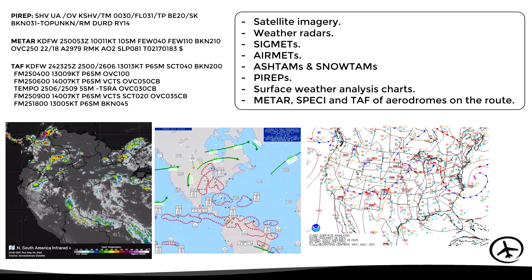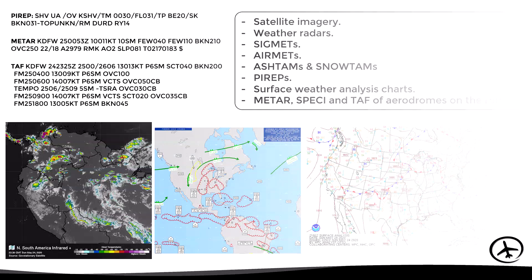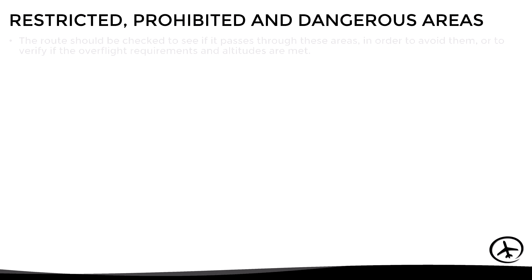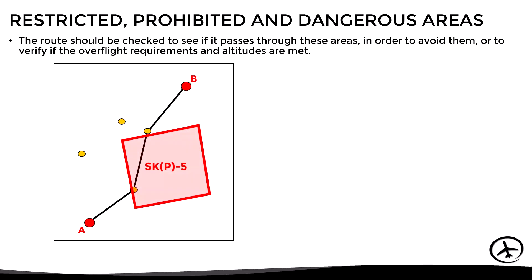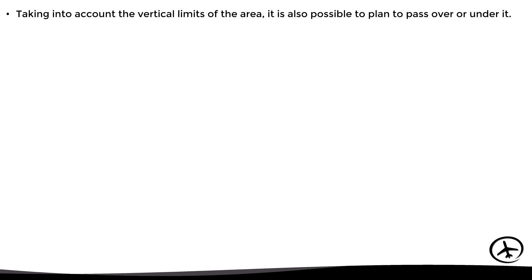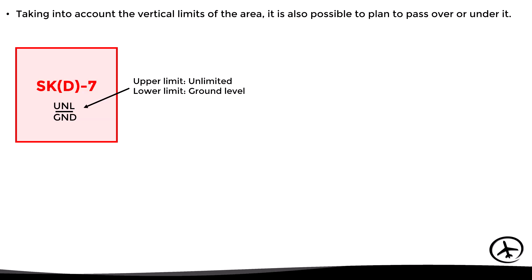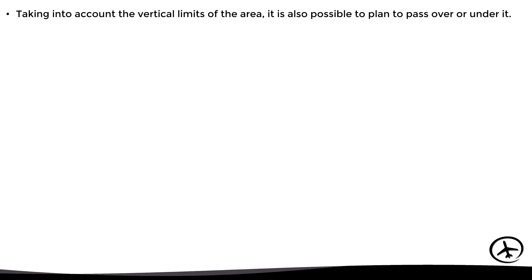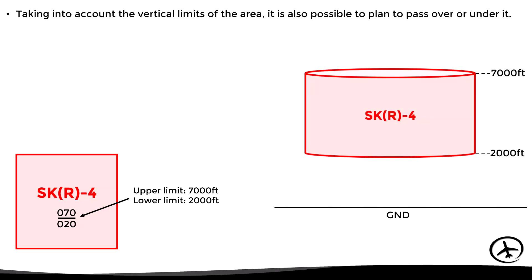Let's continue with the considerations related to airspace structure and classification, starting with restricted, prohibited, and dangerous areas. During flight planning, we have to observe the navigation chart carefully for possible conflicts with certain airspaces, then decide whether to avoid them or fly through them provided we meet the requirements. We must consider that these airspace structures are three-dimensional, meaning we must observe not only the lateral limits depicted on the chart but also the vertical limits. If the lower limit is the ground and there is no upper limit, we are forced to fly through or avoid it laterally. However, if there are specific lower and upper limits, we can fly above or below it.